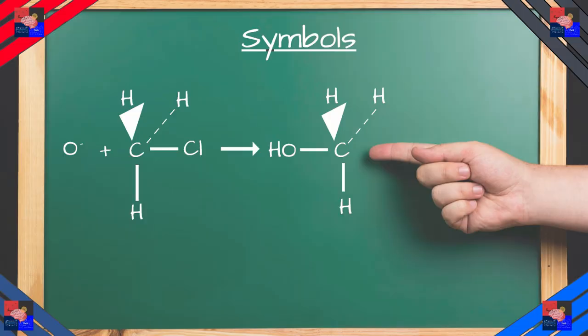Let's look at the different type of arrows that we can use for reaction mechanisms. This is an arrow you've probably seen before. This is the forward reaction. This is when the reactants turn into the products.